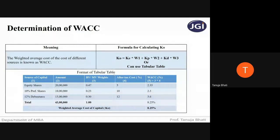In the tabular method, you need five columns. Column 1: sources of capital — write the different sources through which the company is raising finance (equity shares, preference shares, 12% debentures). Column 2: amount — either book value or market value. Column 3: weights — assign the weights. Can anyone tell me how to get 0.47, 0.23, or 0.30 as weights?